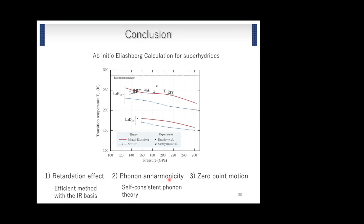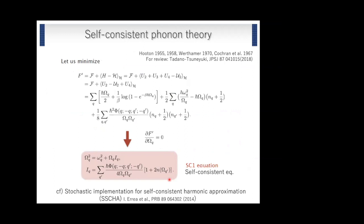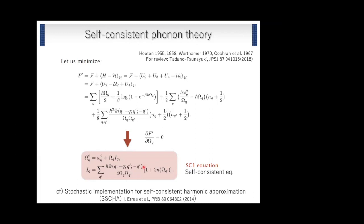Question: Could I ask about the self-consistent phonon approximation? My naive feeling is that the parameterization of the effective harmonic oscillator will be temperature dependent for an anharmonic system. I'm confused that you do a T=0 projection and then extrapolate to very high temperature — how can I understand that? Answer: In this theory it is self-consistent. We exploit the fact that phi is a very sparse matrix, calculate the force constants, and solve the equation. The phonon occupancy includes Bose-Einstein distributions, so it is effectively temperature dependent.